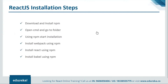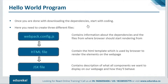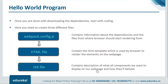Let's see how our programs are created. To create our program, we'll be creating three files: one will be webpack.config.js, one will be an HTML file, and the last one is the JSX file. The webpack.config.js is a configuration file which will contain information about the dependencies and the files from where the browser should start rendering. The HTML file will contain the HTML template used by the browser to render elements on the web page. The JSX file will contain a description of what elements we want to display on our web page.